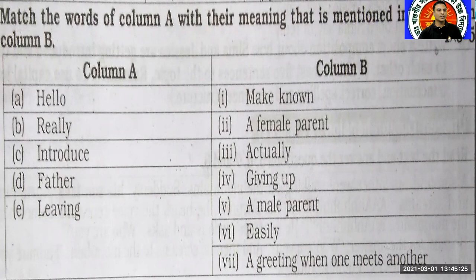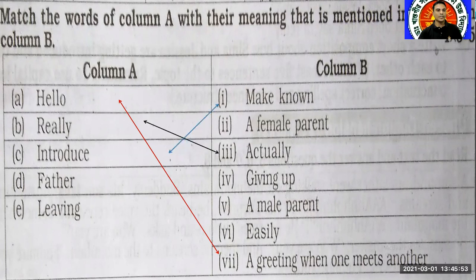Now try to match these words. In Column A, the first word is 'hello,' so the closest meaning of 'hello' is 'a greeting when one meets another.' 'Really' — the closest meaning from Column B is 'actually.' 'Introduce' — the closest meaning is 'make known.' The closest meaning of 'father' is 'a male parent.' The last one is 'living,' and the synonym is 'giving up.'